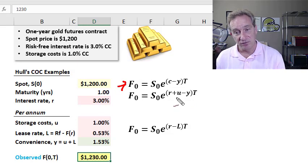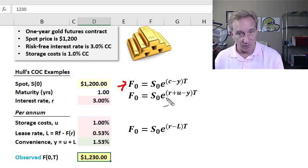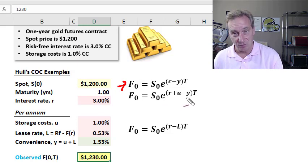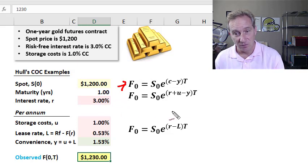We said this is general, and then it has specific variations depending on which cost of carry factors are applicable. Well, in gold, those factors are the risk-free rate, always applicable storage for gold, and we said convenience yield. So these are the three factors. There's my general form.